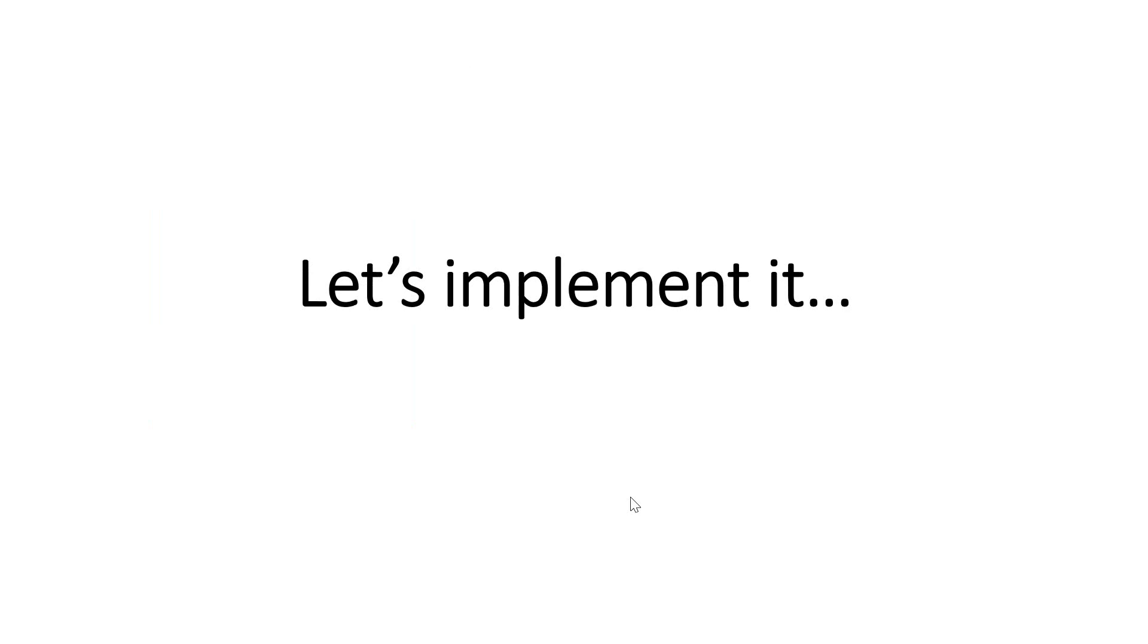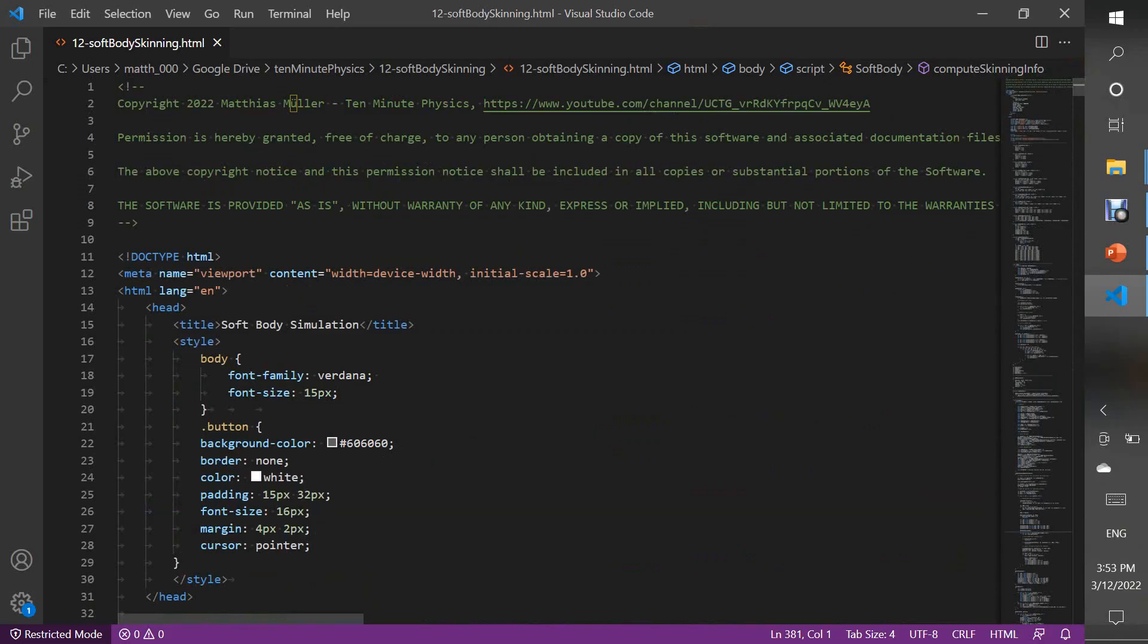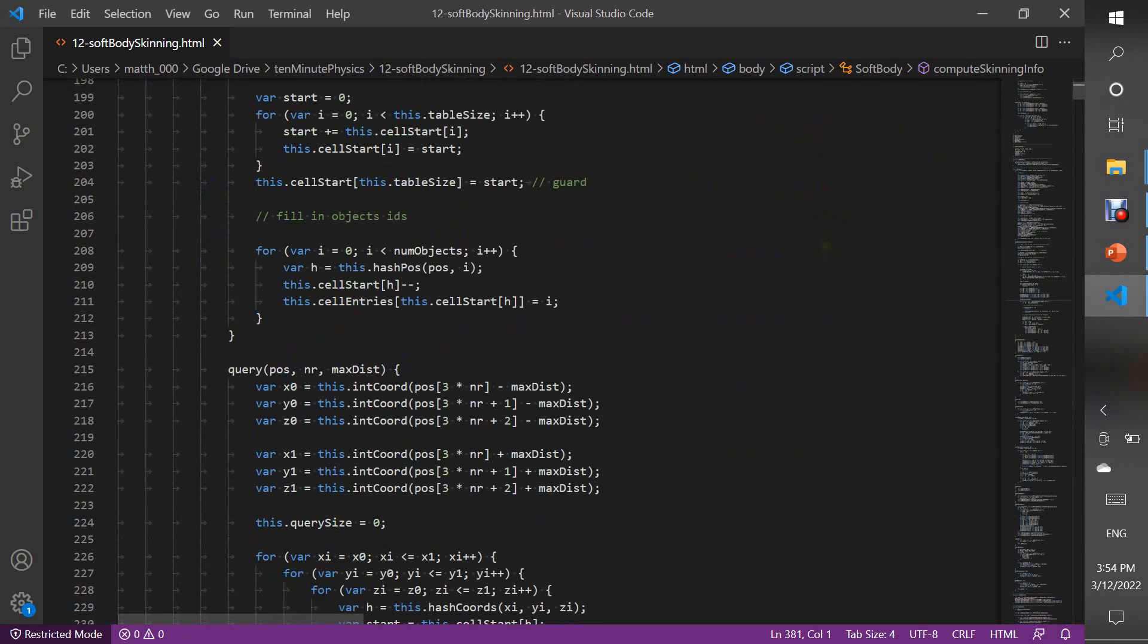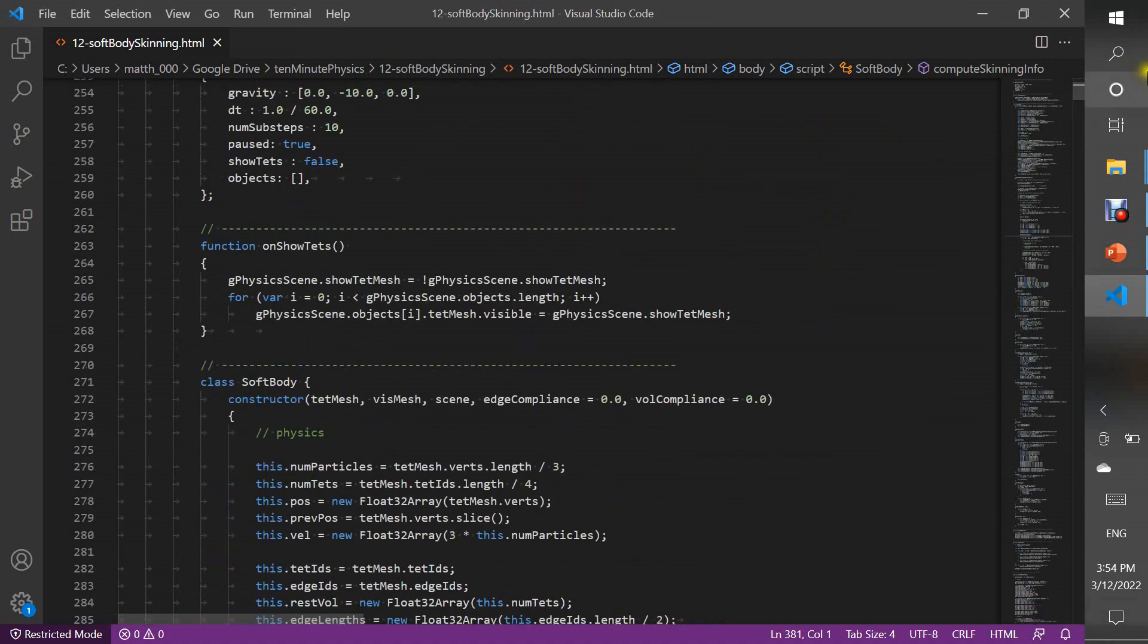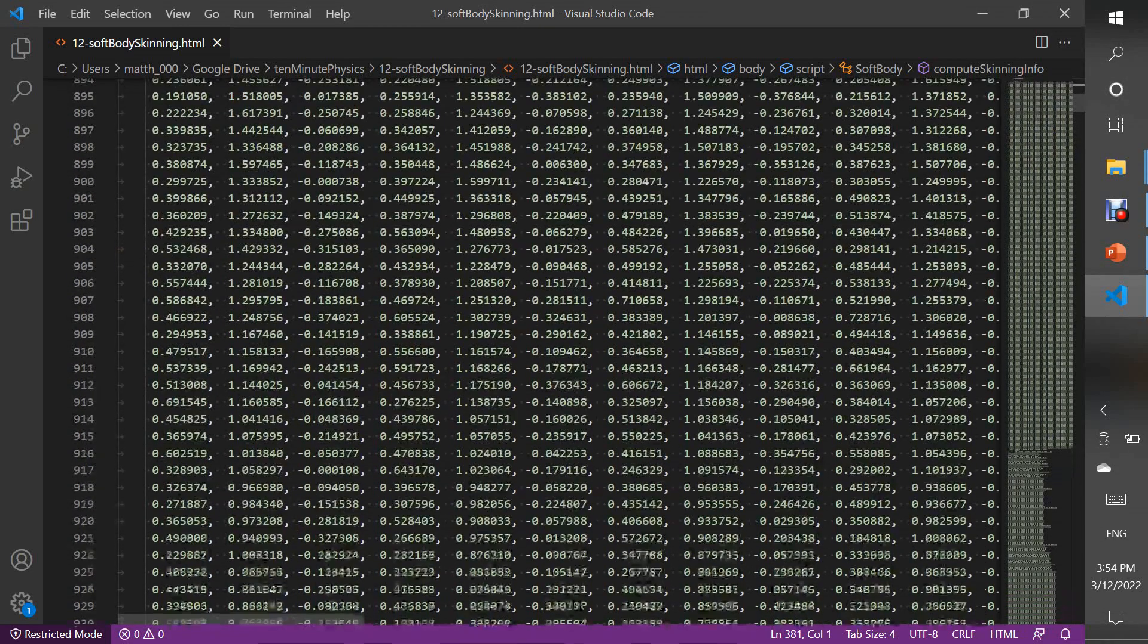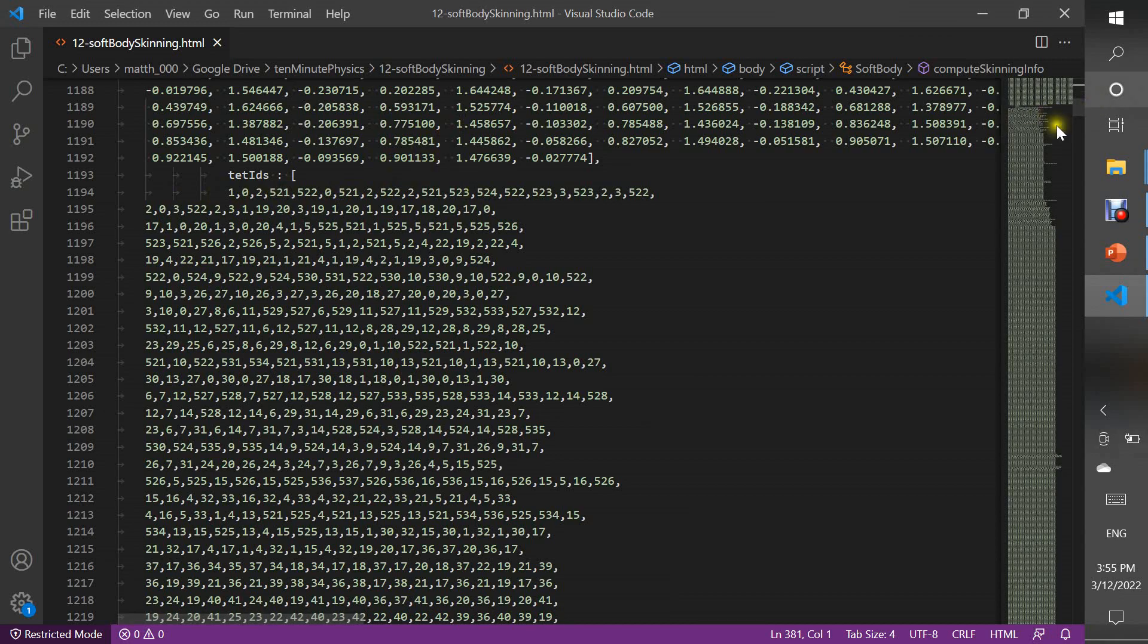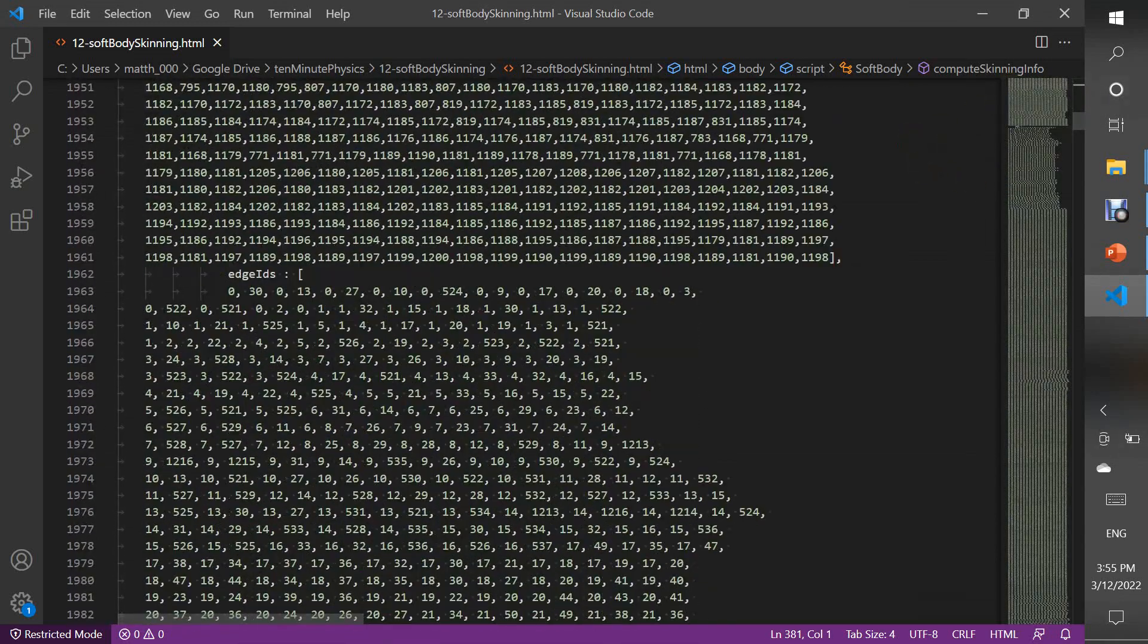So let's implement this. This demo is an extension of the demo we wrote in tutorial number 10 about softbody simulation. I also added the hash class we wrote in tutorial number 11. At the very bottom of the file, we have the meshes. First, the tetrahedral mesh with its vertices. Here you see the indices of the tetrahedra. Four consecutive numbers define one tetrahedron. We also have the edge indices of the tetrahedra for visualization.